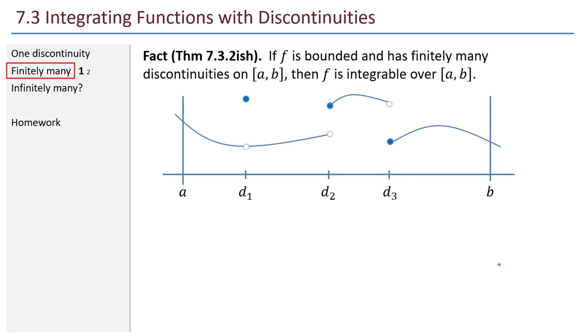Now let's turn our attention to finitely many discontinuities. I call this theorem 7.3.2-ish. If you look in the book, theorem 7.3.2 is actually quite a bit different from what I'm presenting, but they try to give it the same effect. Ultimately, what they're trying to say is that if a function has finitely many discontinuities, then it's still integrable. We can actually prove this whole statement all at once. The idea is really that we're going to look at the proof for one discontinuity and just generalize it a little bit. Same basic idea.